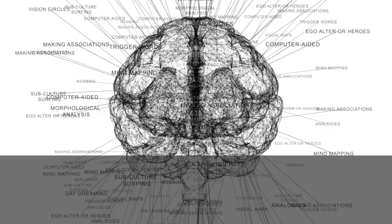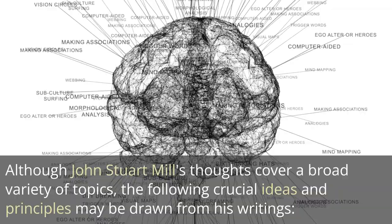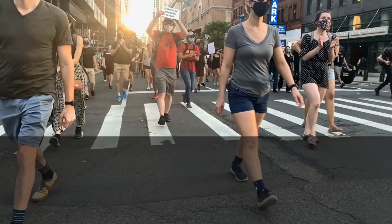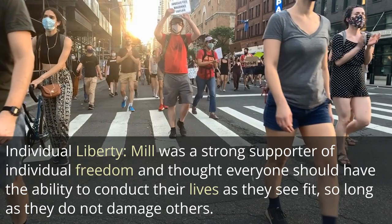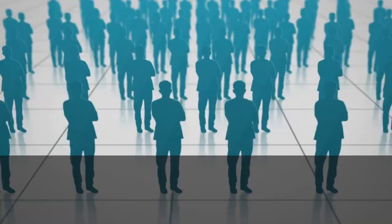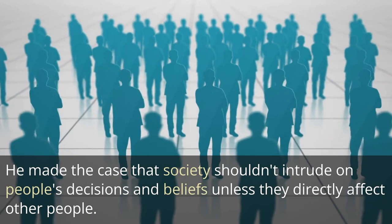Having read John Stuart Mill, although his thoughts cover a broad variety of topics, the following crucial ideas and principles may be drawn from his writings. First, Individual Liberty: Mill was a strong supporter of individual freedom and thought everyone should have the ability to conduct their lives as they see fit, so long as they do not damage others. He made the case that society shouldn't intrude on people's decisions and beliefs unless they directly affect other people.